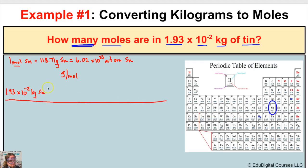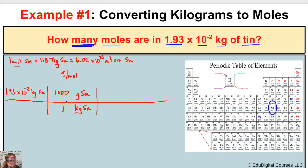In our first step we are going to cancel out kilograms of tin, so we put that unit in the denominator of our conversion fraction so it cancels out. Remember: if the same unit appears in both the numerator and denominator, they cancel — even when they're just units. The prefix kilo means 10 to the third, or 1000, so there are 1000 grams in one kilogram. Using that equivalency, kilograms of tin in numerator and denominator both cancel out, leaving us with grams of tin.